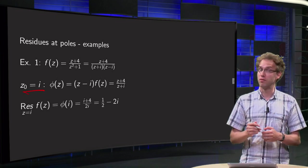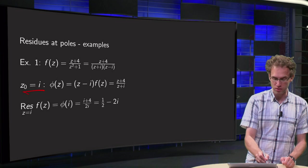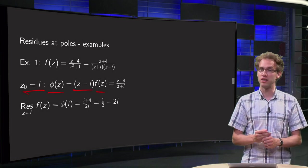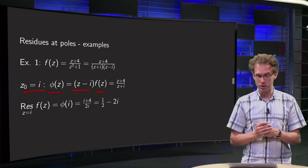That means that we have to find our phi of z. For example, phi of z equals z minus i times f of z equals z plus 4 over z plus i.